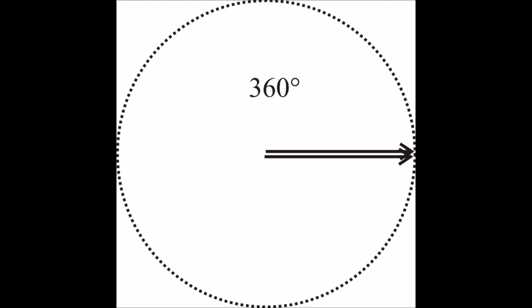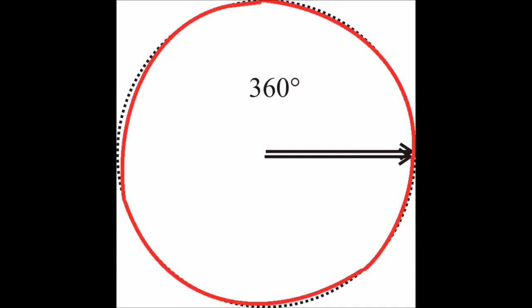Let's say you've just 360 noscoped someone in a match of Call of Duty Modern Warfare 2. The length of the circle that you made when you spun around is called a circumference.